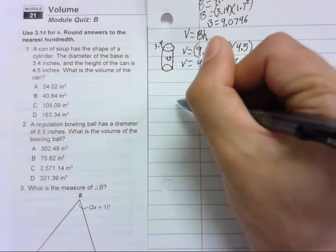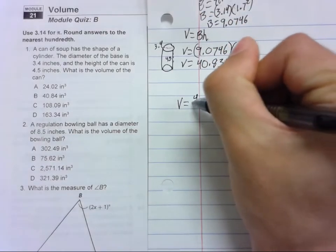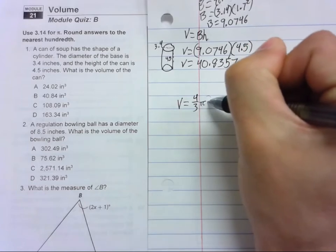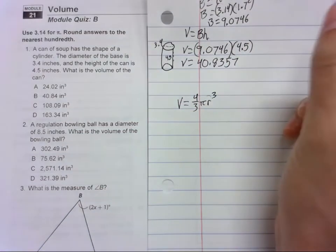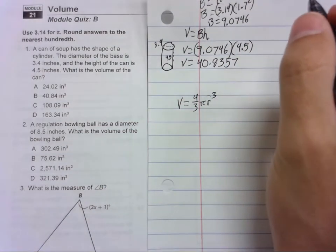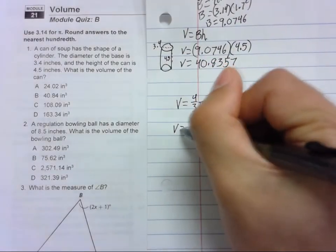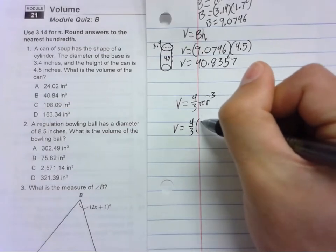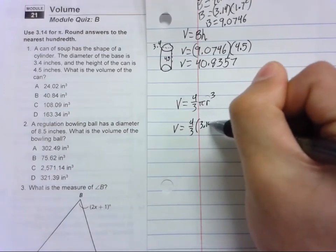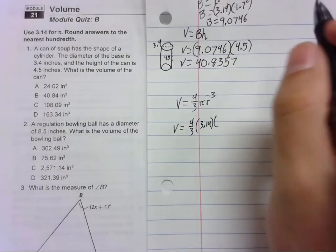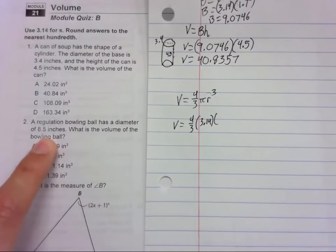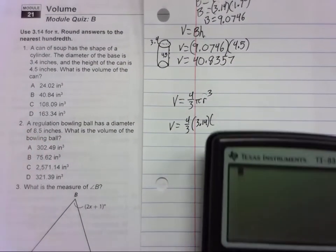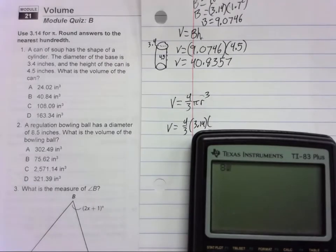Well, the volume of the bowling ball is a sphere, so we're going to use volume equals four-thirds pi times radius cubed. So that's the formula. Now we just substitute: volume equals four-thirds times 3.14 times the radius. Well, if the diameter is 8.5, we need half of that, so it's 4.25.